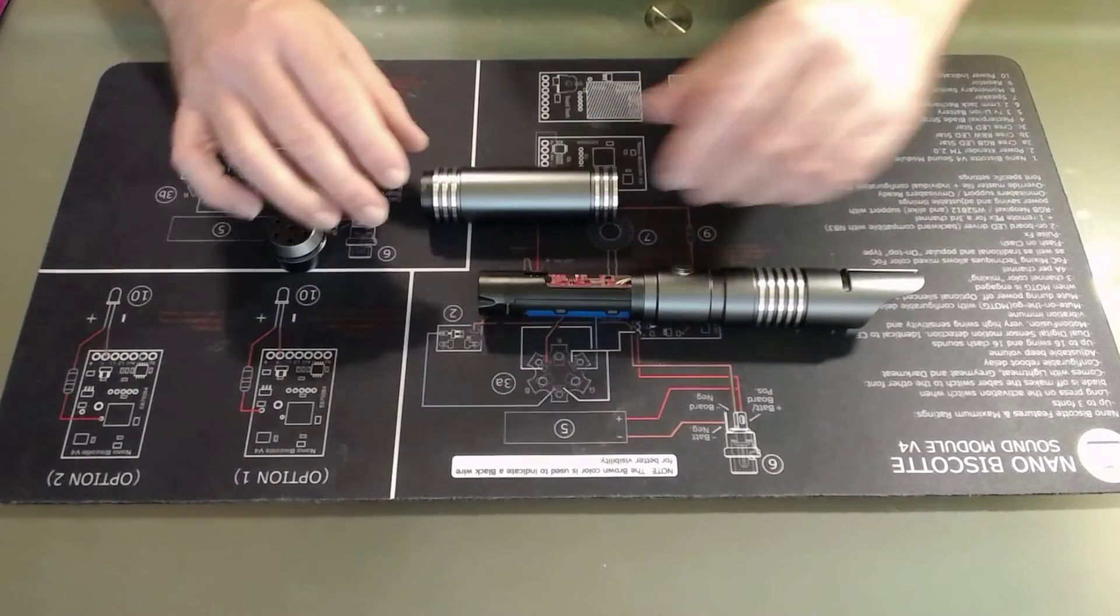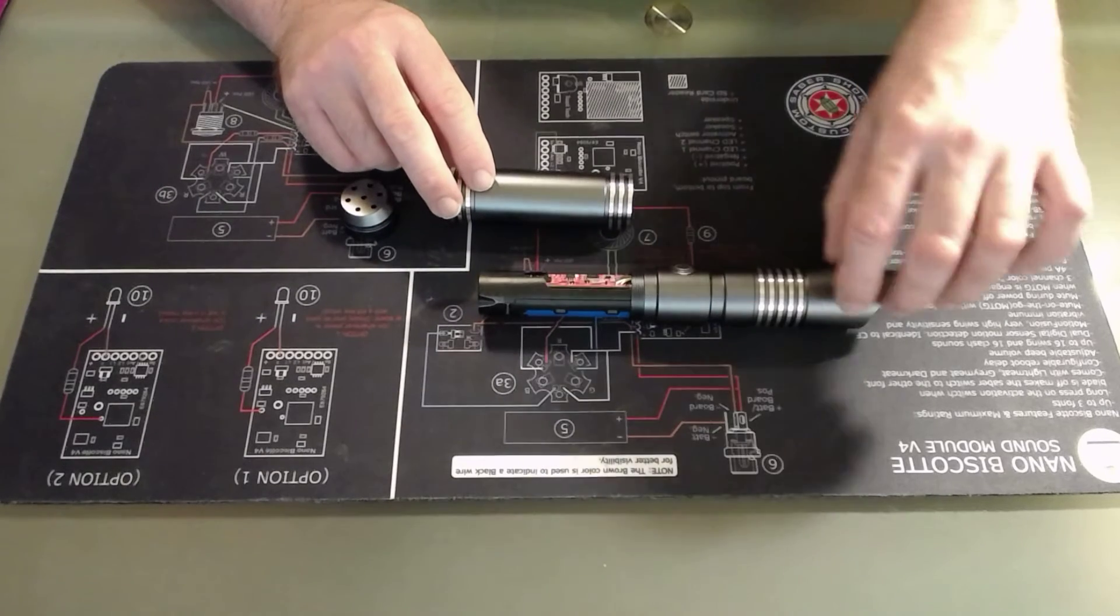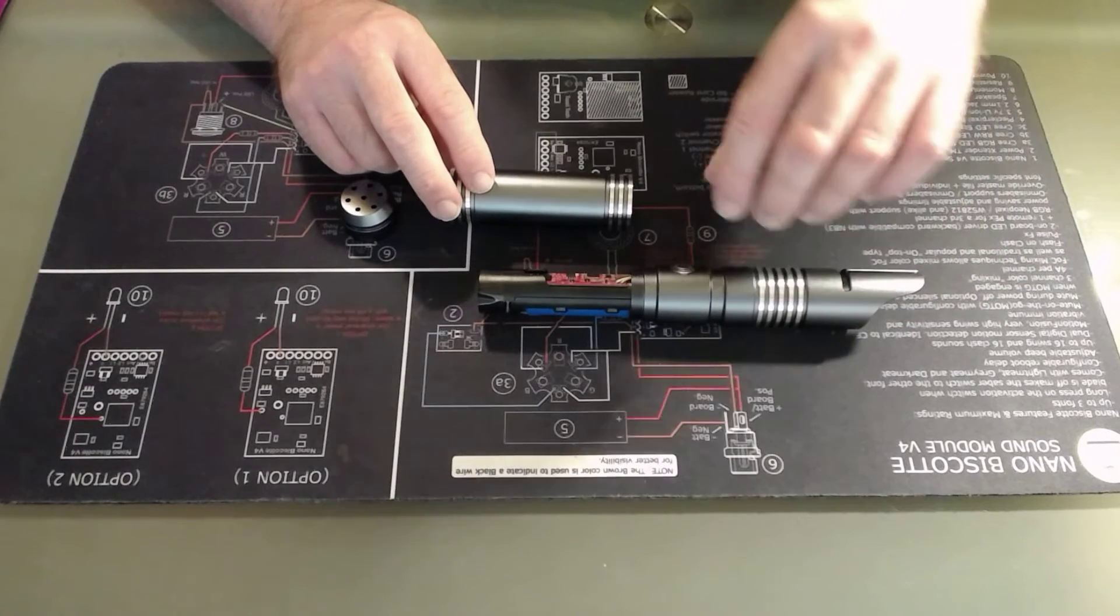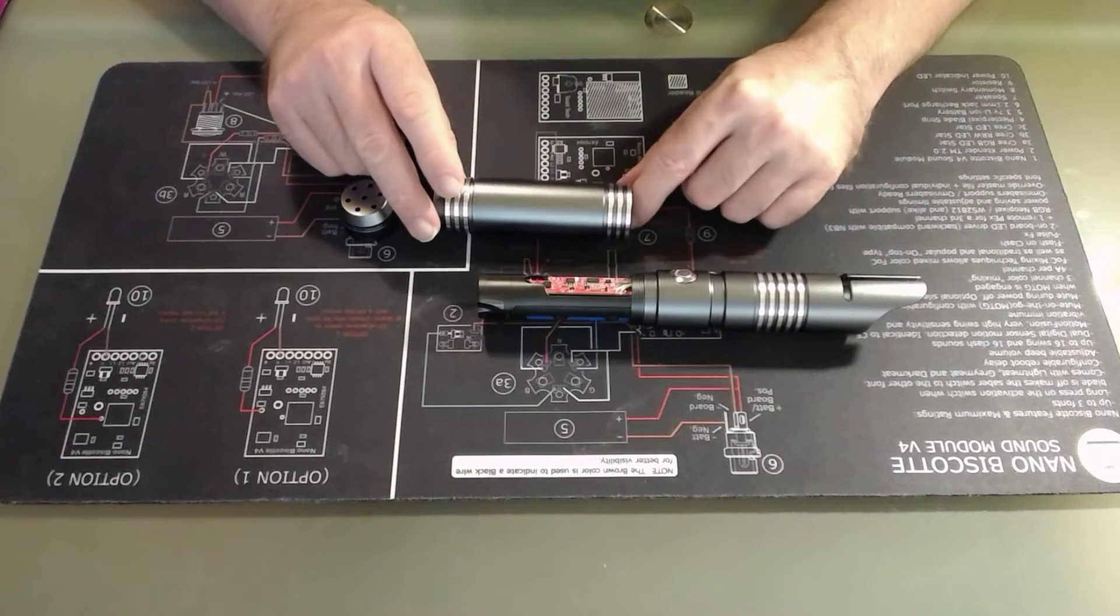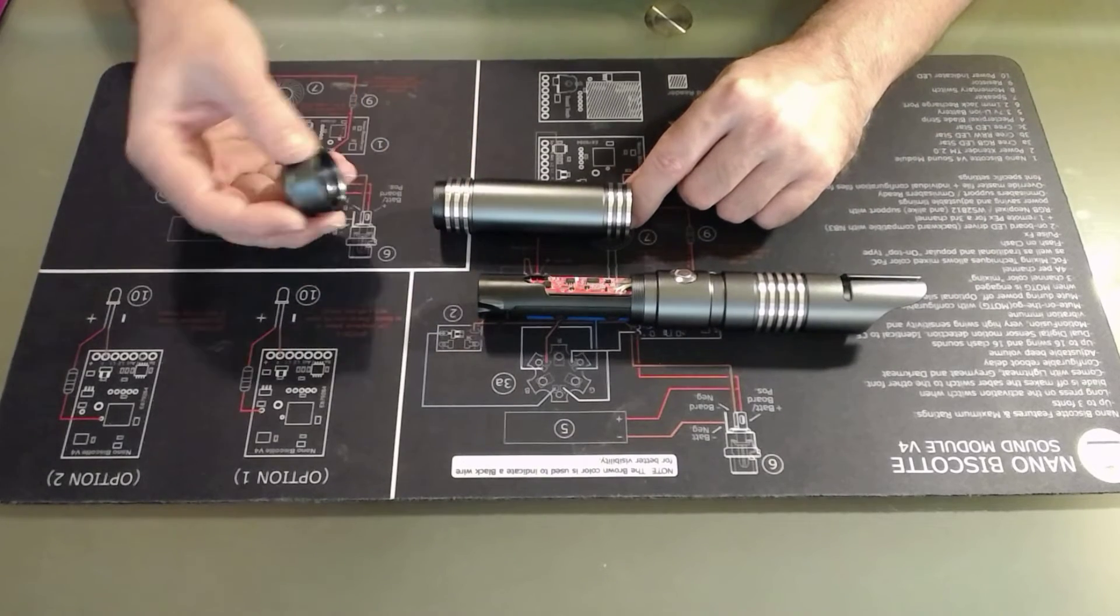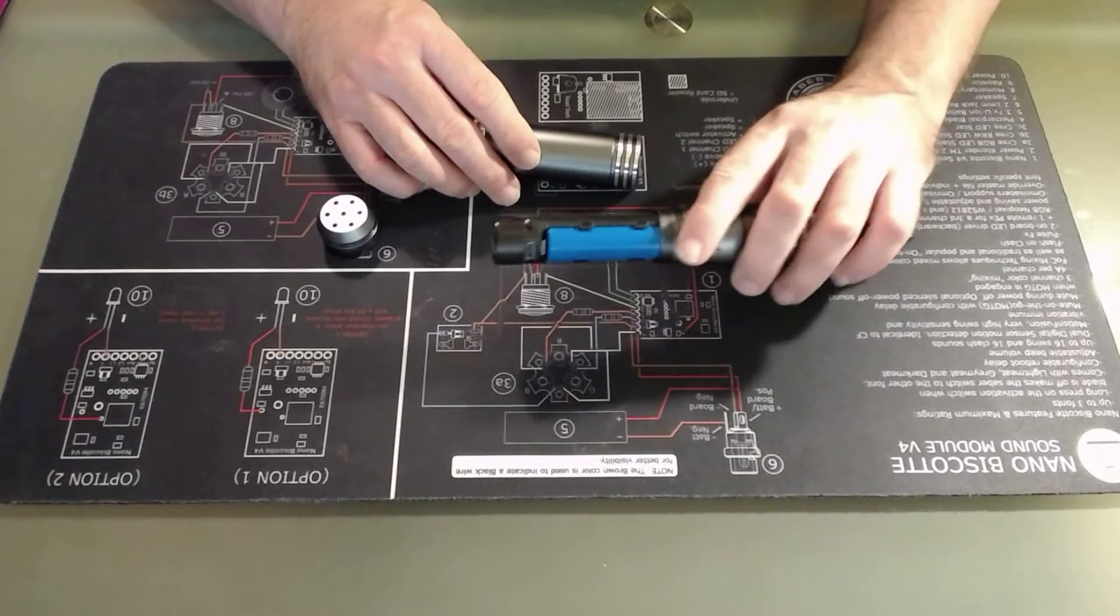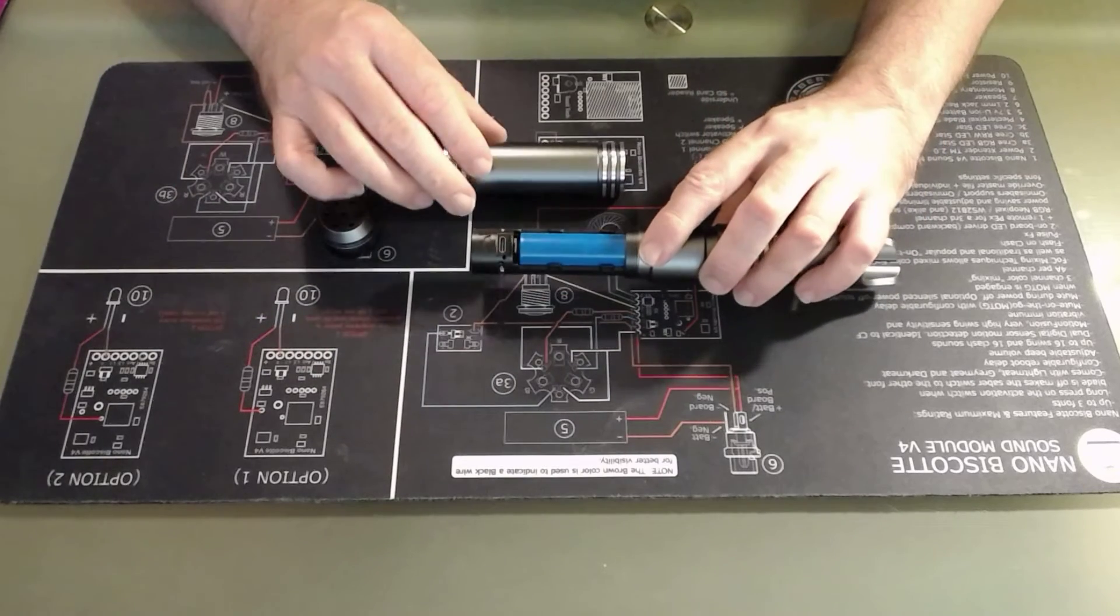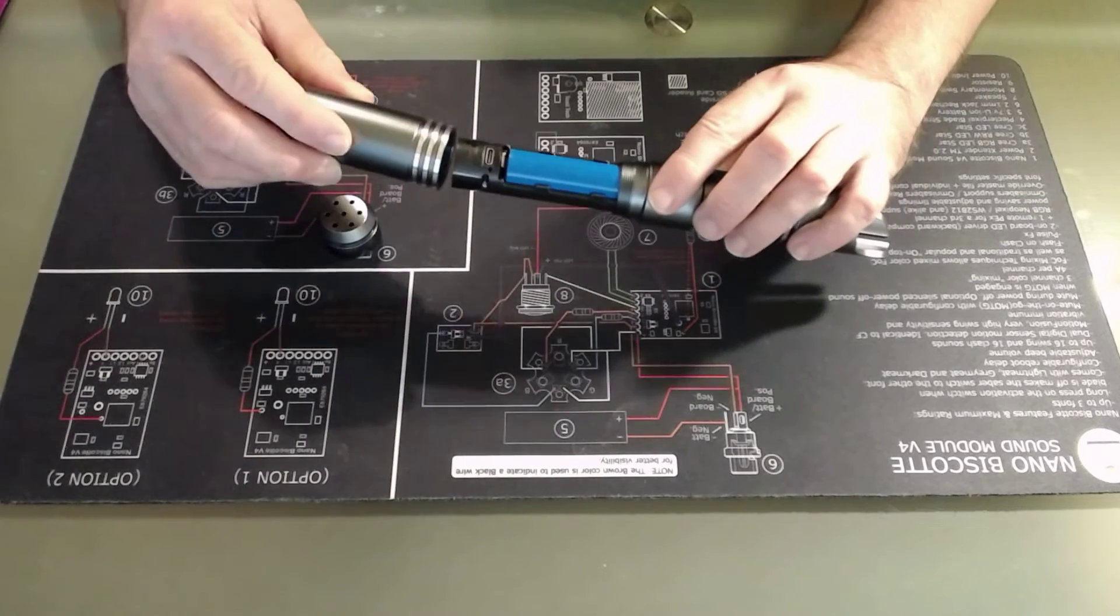And the body itself breaks down into three separate pieces. The switch area and the emitter is one single machined piece. This allows everything to be nicely aligned. And then the Sabre breaks down like so. Of course you'll have to remove the body in order to access the recharge port between uses.